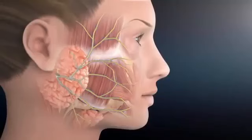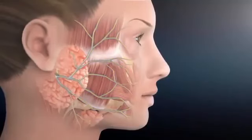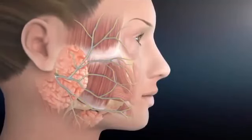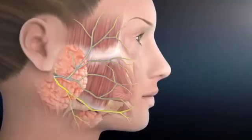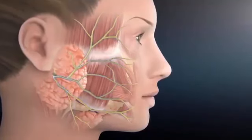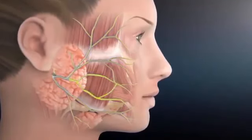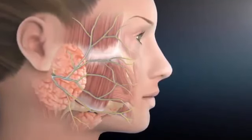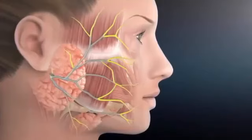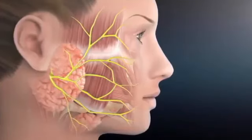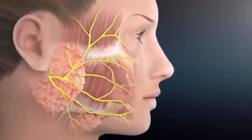Once the facial nerve enters the parotid gland, it generally divides into two main branches called upper and lower divisions, and then into five other branches, which then subdivide into many smaller branches that connect to the facial muscles.